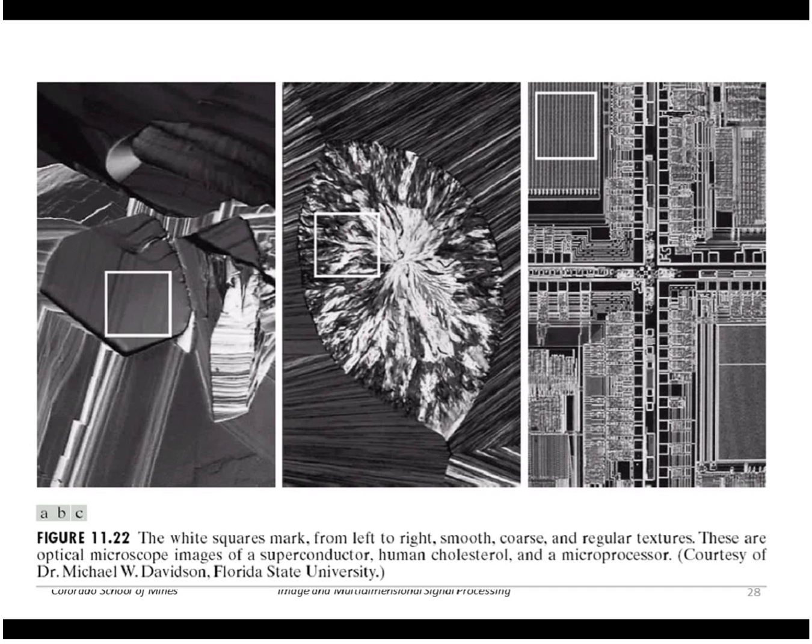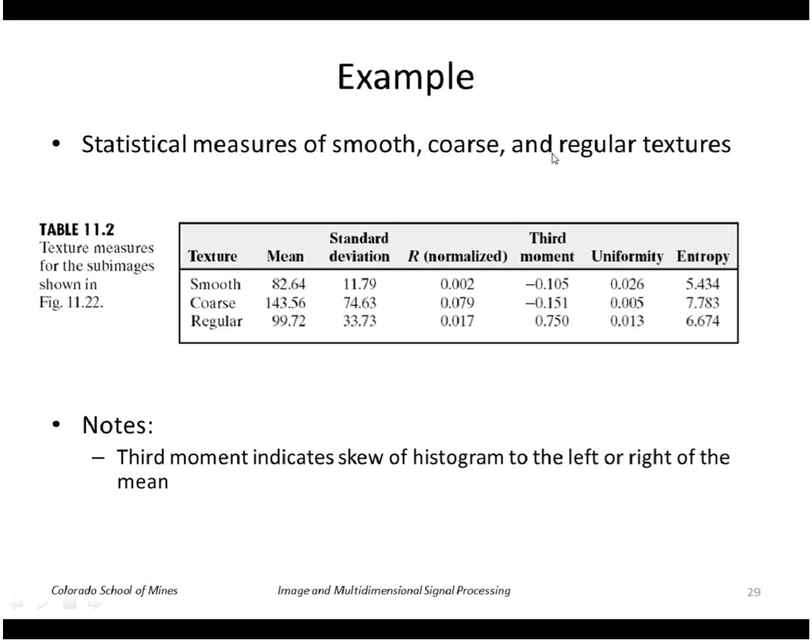So here's an example of three image regions, a uniform region, a coarse texture, and a kind of a regular texture here. So those values that we just looked at are shown for those three regions. Let's see, the standard deviation is highest for the coarse texture and lowest for the smooth texture. We also have similarly properties for uniformity and entropy.